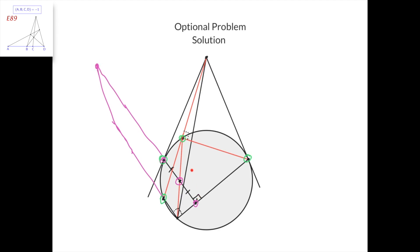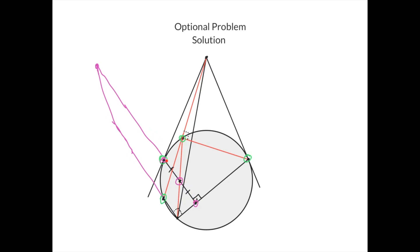And therefore, this length divided by this length times this length divided by this length equals 1. But this length equals this length. Therefore, this divided by this equals 1. But that means that this distance equals this distance, which is impossible since this distance is always larger than this distance. This is a contradiction with our assumption that this line and this line intersect at a finite point.